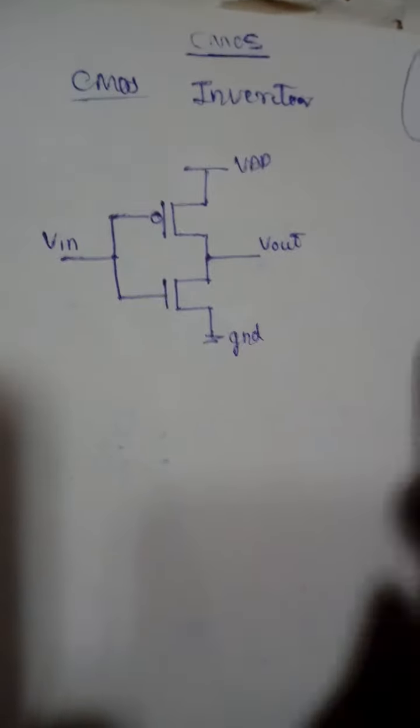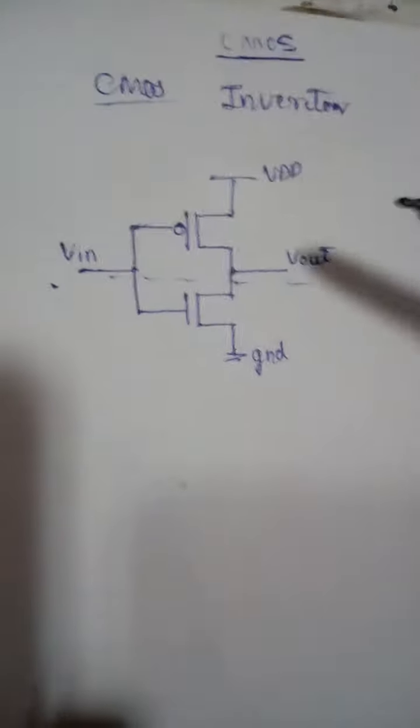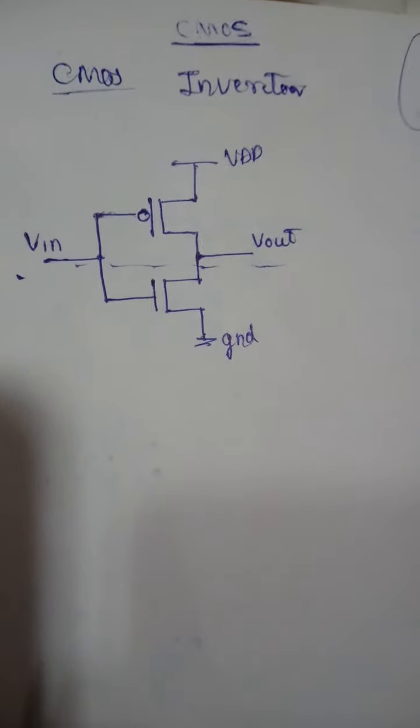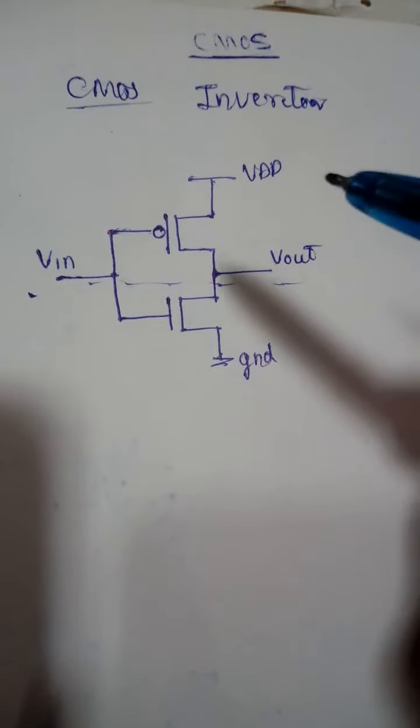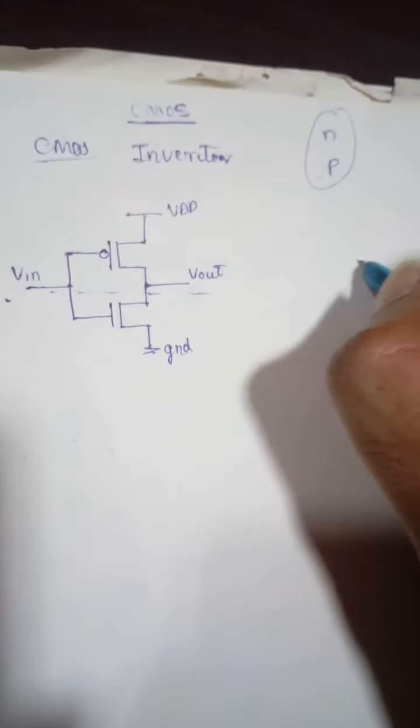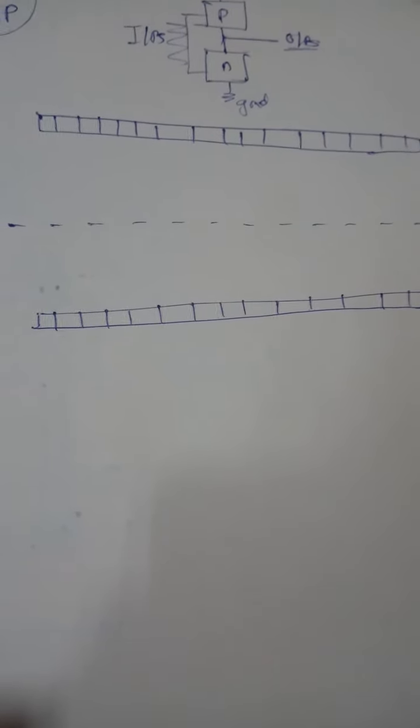Now we'll draw the layout. There is a demarcation line — whatever transistor comes above it will be your P transistor, and whatever comes below will be your N transistor. The diffusion layer cannot cross the demarcation line, but the metal layer and polysilicon layer can. First, I'll draw the metal lines for VDD and ground, and indicate the demarcation line.